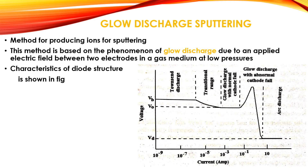Next, we discuss glow discharge sputtering, which is one of the cheapest methods for producing ions for sputtering. This method is based on the phenomenon of glow discharge due to an applied electric field between two electrodes in a gas medium at low pressures. The characteristics of the diode structure are shown in the figure, displaying the Townsend discharge, transitional range, glow discharge with normal cathode fall, glow discharge with abnormal cathode fall, and arc discharge — shown as a variation of voltage with respect to current.